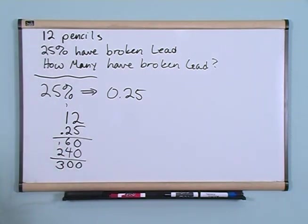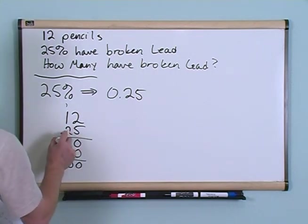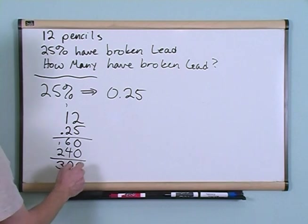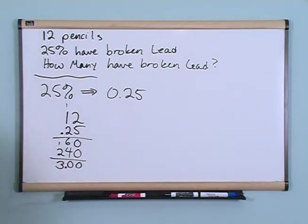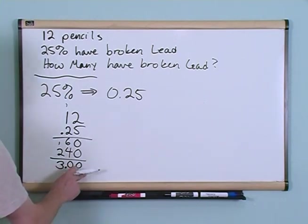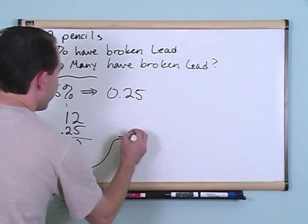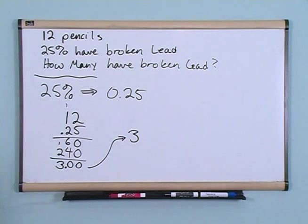And then finally, because it's a decimal, we have to move the decimal point. There are two decimal places after the decimal point here. So we start at the right and move left 1, 2. And if any of this is unfamiliar, then go ahead and go back to the section on multiplying decimals. We have two digits after the decimal, so I'm going to move the digit over here. So what we have is 3.00, which is the same thing as three pencils that have broken lead.